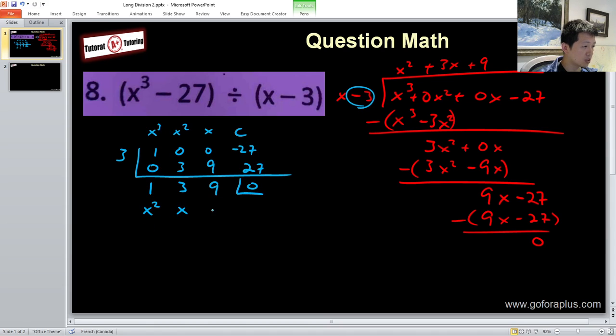So I'll have x squared here, x here, and then constant. So I'll have x squared plus 3x plus 9 as my answer. So this is basically the same thing. So this is how we do this problem.